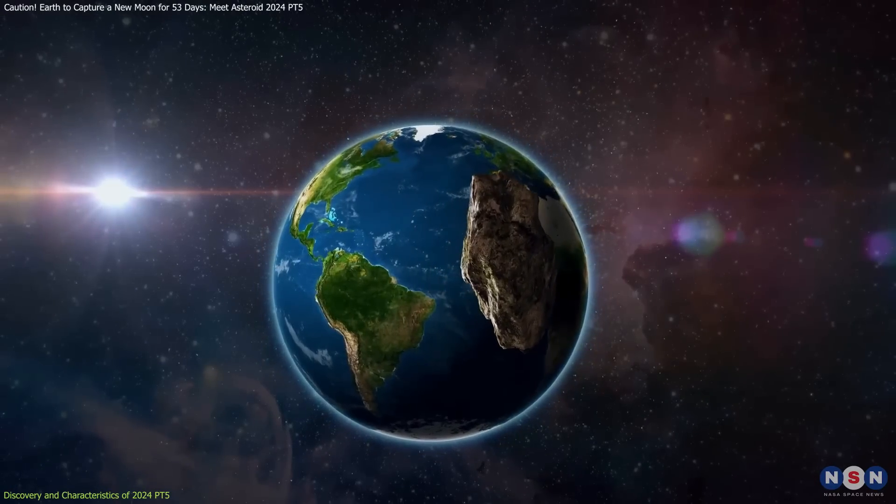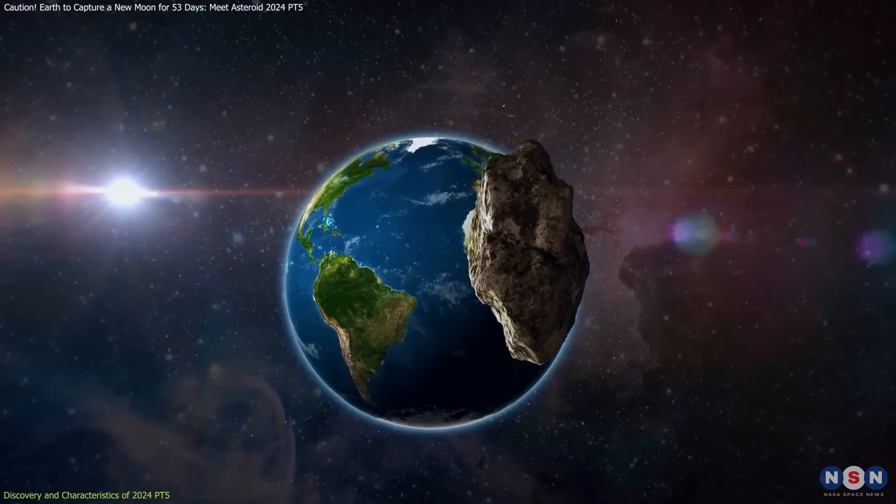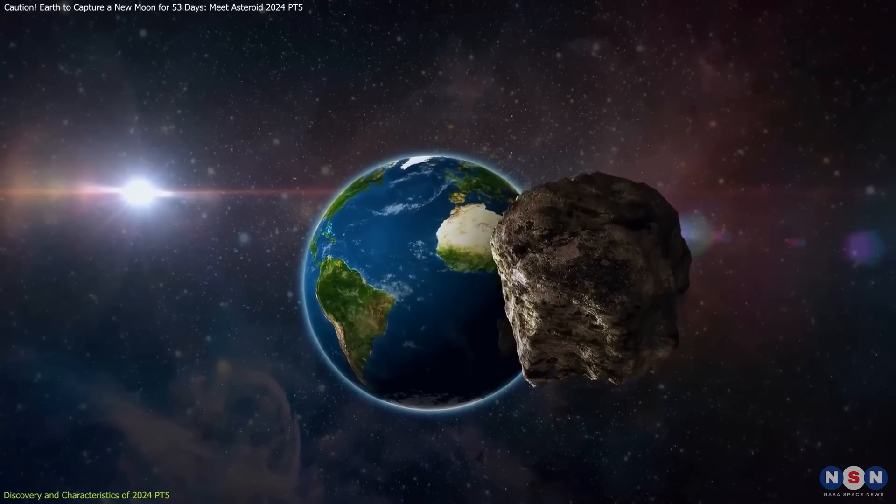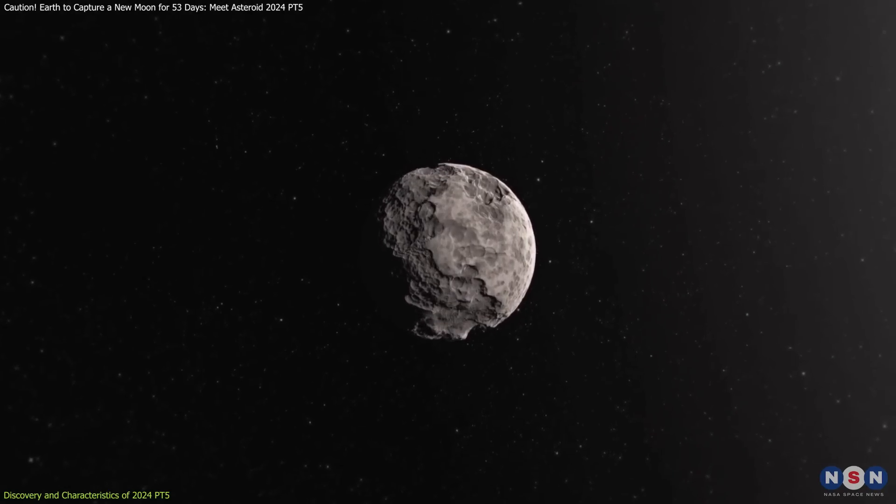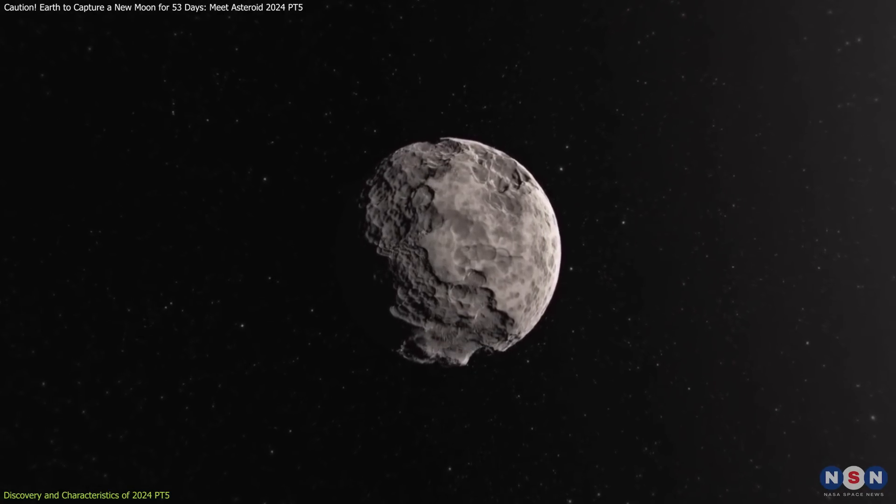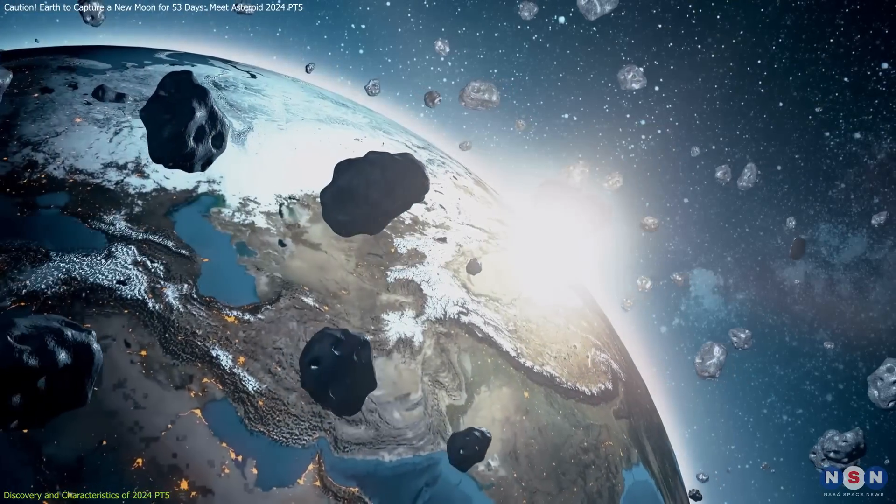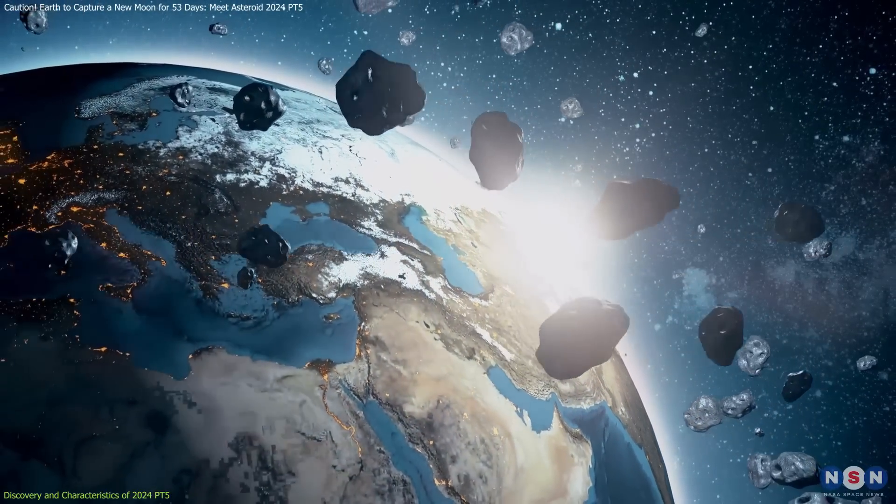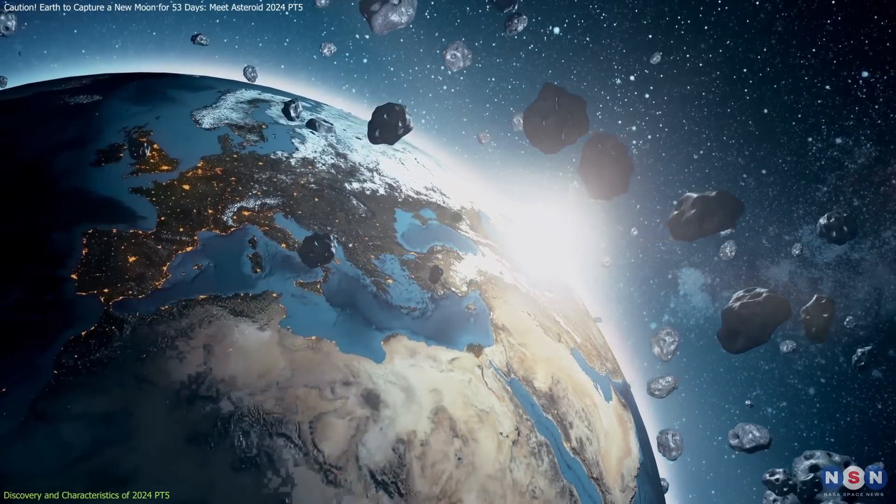Unlike the larger asteroids that pass by Earth at high speeds and continue their orbits around the Sun, smaller objects like this one can be caught in a gravitational tug-of-war. This tug-of-war results in a temporary capture, creating what is often referred to as a mini-moon.